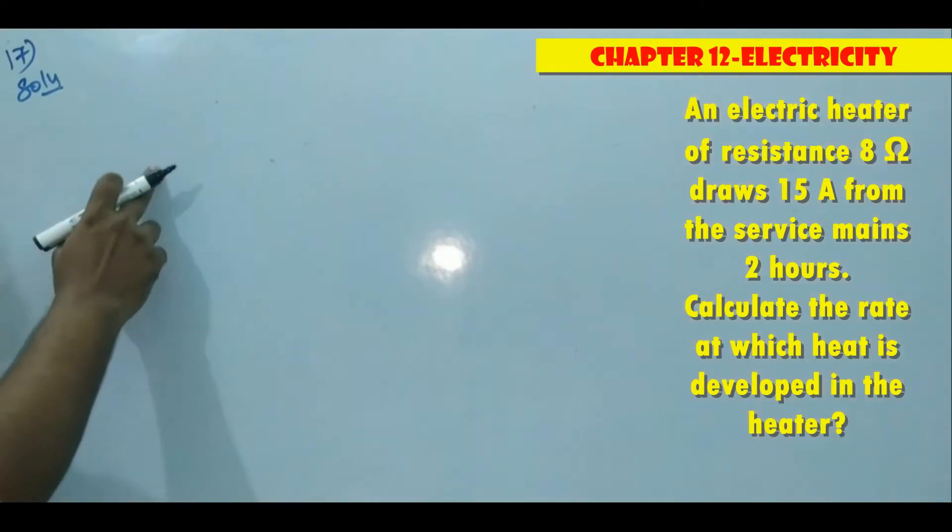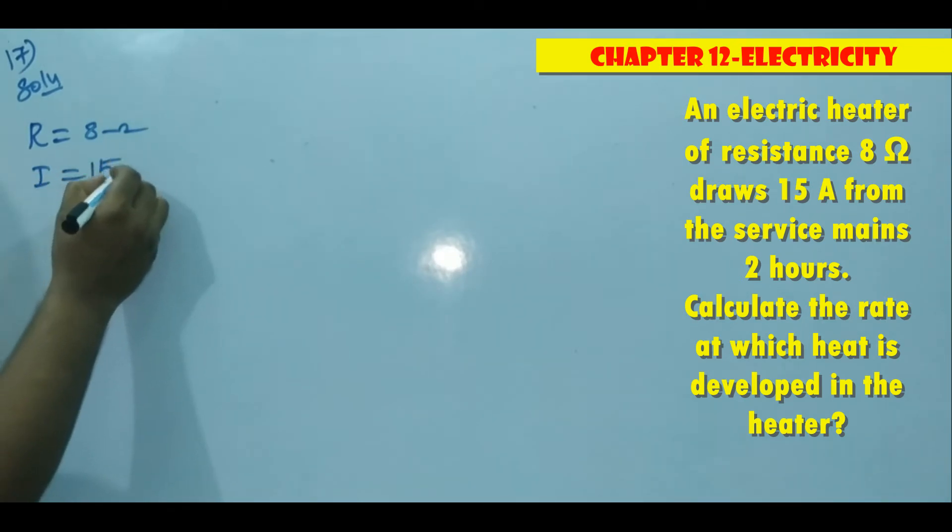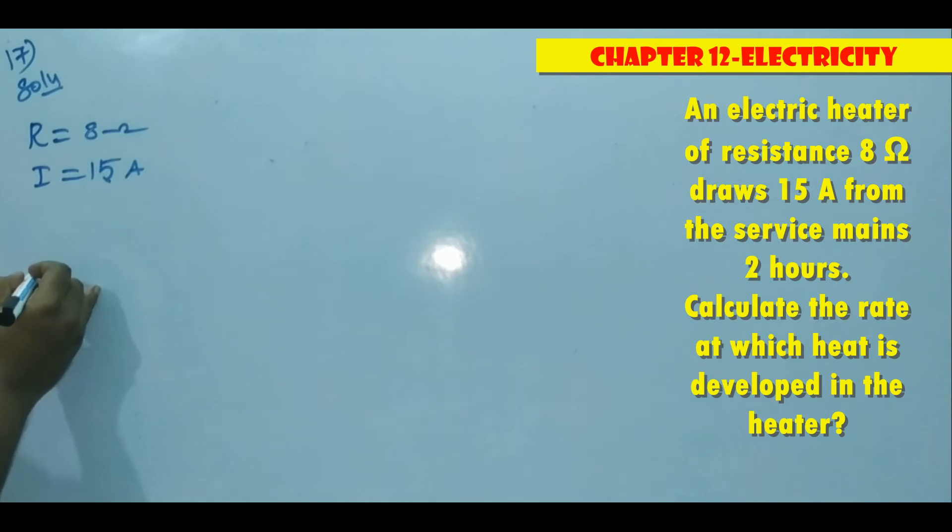So an electric heater of resistance 8 ohm. Resistance of electric heater is 8 ohm draws 15 ampere current. I is equal to 15 ampere. From the service main for 2 hours then time t is equal to 2 hour.